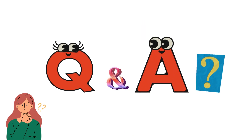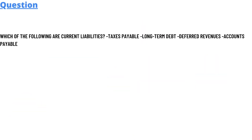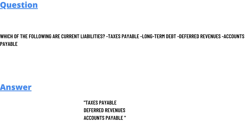Our today's question is: which of the following are current liabilities — taxes payable, long-term debt, deferred revenue, or accounts payable? The correct answer is taxes payable, deferred revenue, and accounts payable. That is the answer to the question.